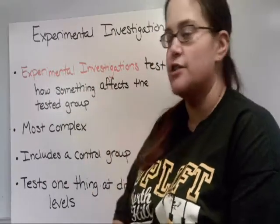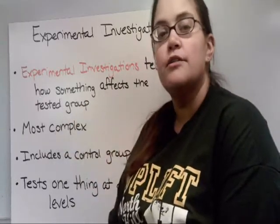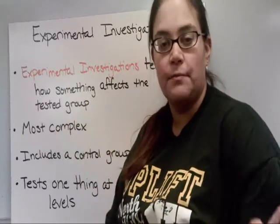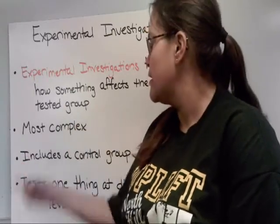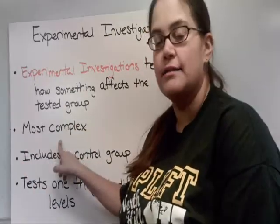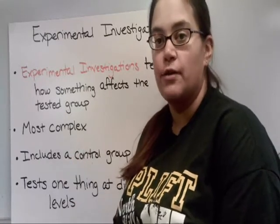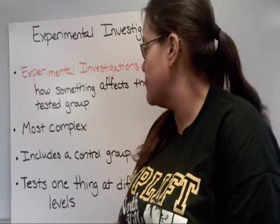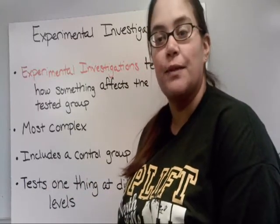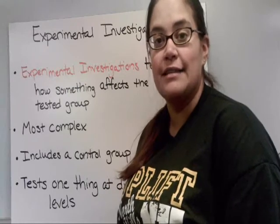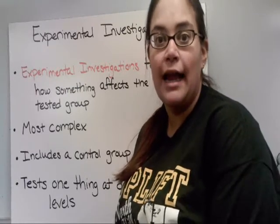An experimental investigation tests how something affects the tested group — you're seeing what effect something has on something else. These are the most complex investigations; there's an extra step you have to do. They include a control group, which basically is a group that doesn't have the tested item, and we'll talk about that more in our next video.